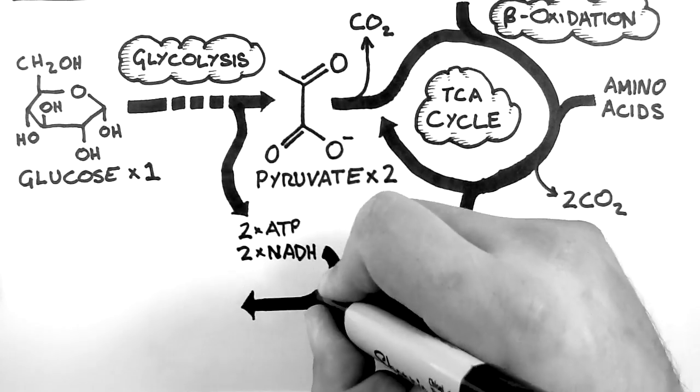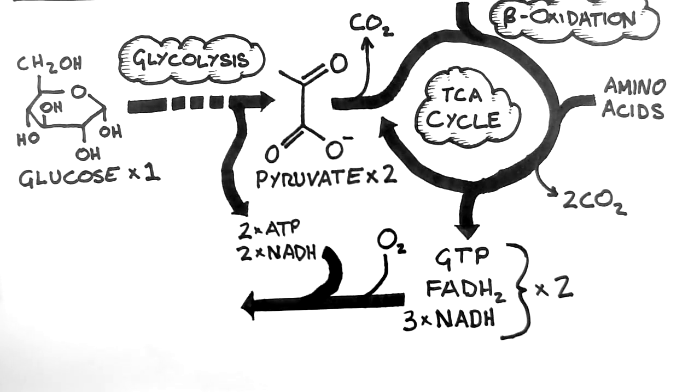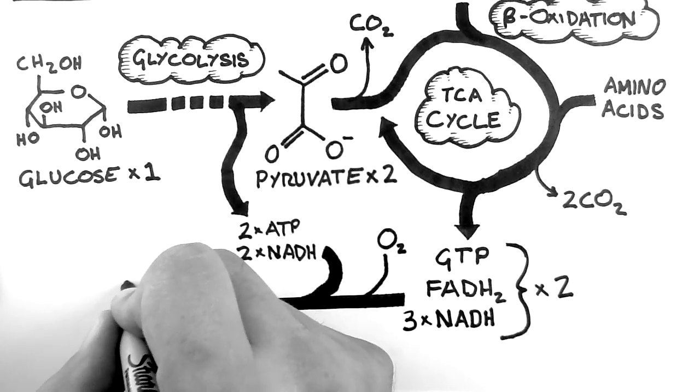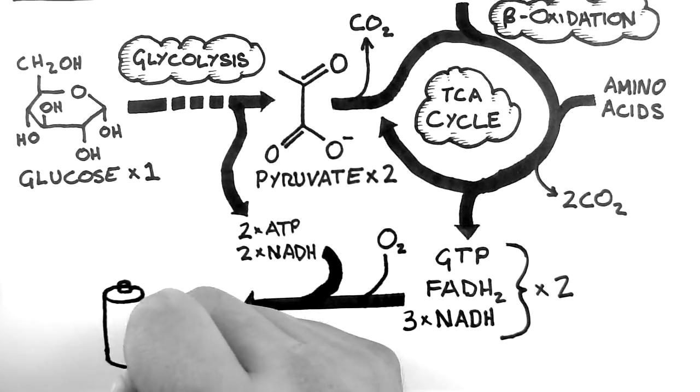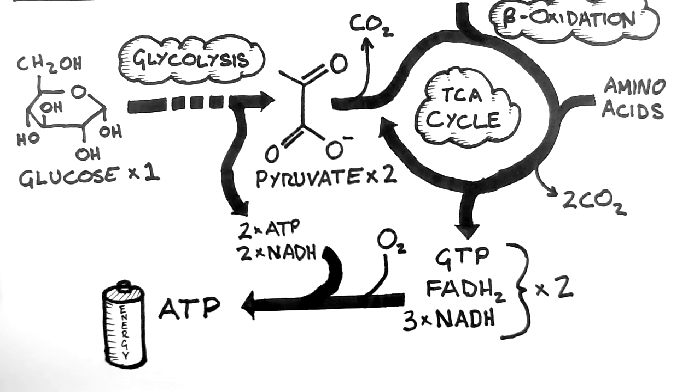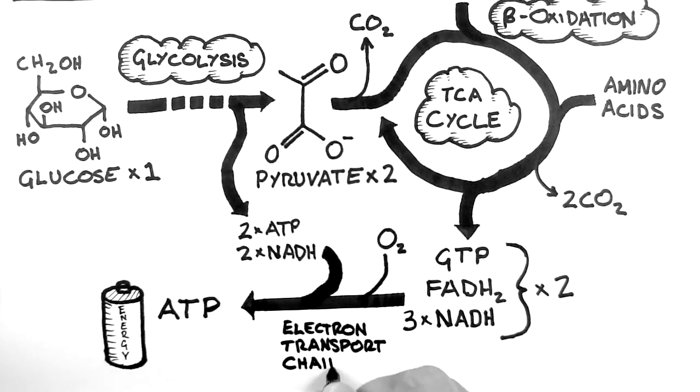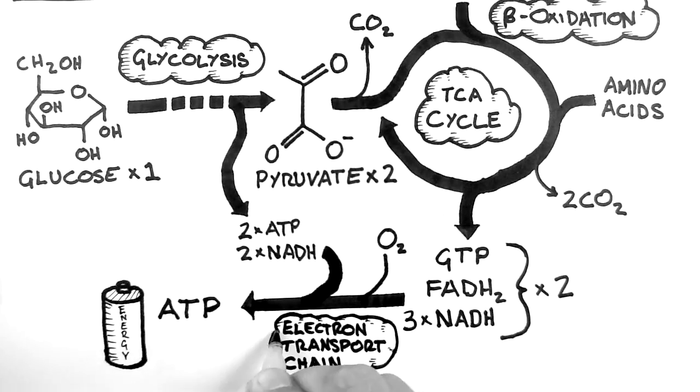The FADH2 and NADH molecules are then used to create ATP, which as I said before is the energy of the cell. This process happens via the electron transport chain within the mitochondria of the cell, and this is a part of the process that requires oxygen. The reason that humans require oxygen is to supply it to the electron transport chain and create ATP.